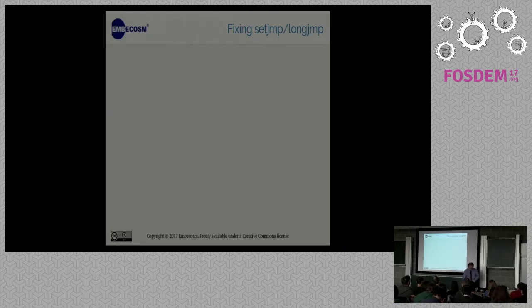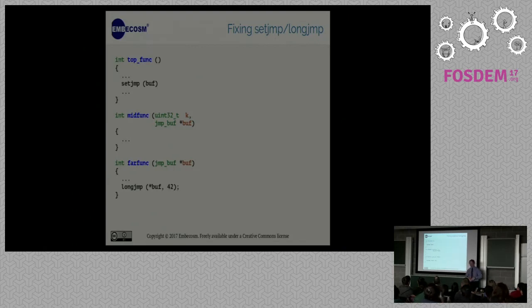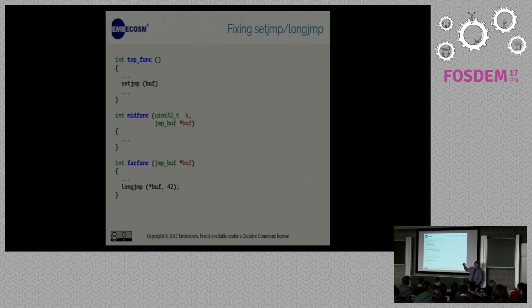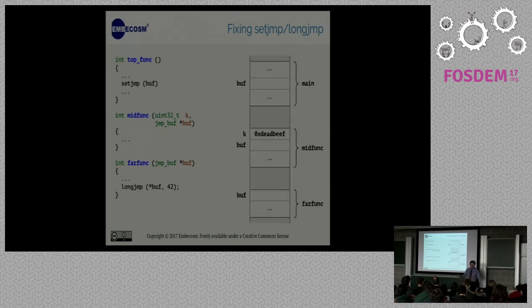One of the things that we do is we work for a lot of customers writing them LLVM and GCC compilers for chips that are not yet out there, and therefore they don't want us to talk about them. So let's go a bit further. What about set jump and long jump? I have my top function and it calls a load of functions and it goes through something called middle function which happens to have a key in it. Eventually gets to the bottom where it's got its jump buffer and it does a long jump back up to the top.